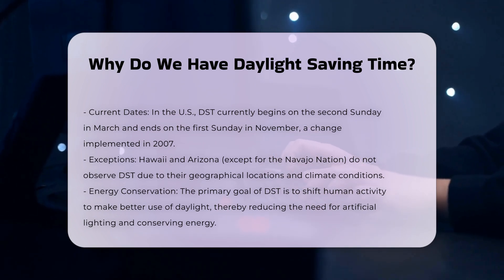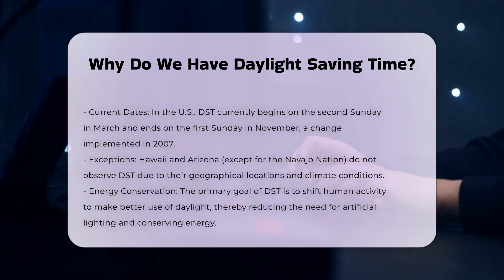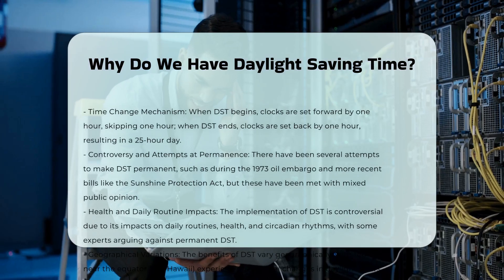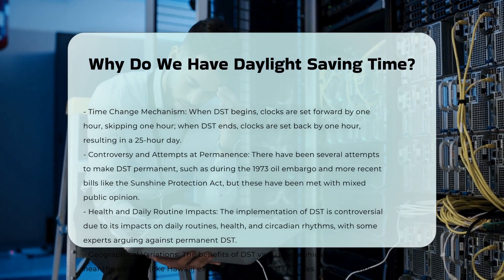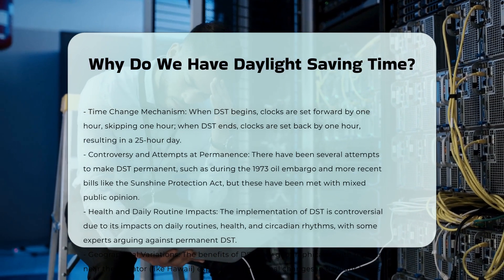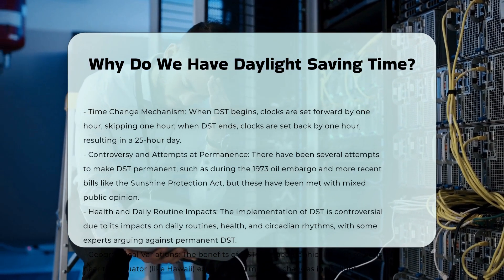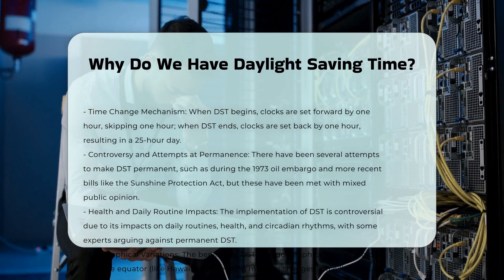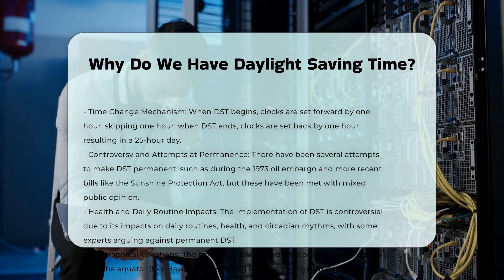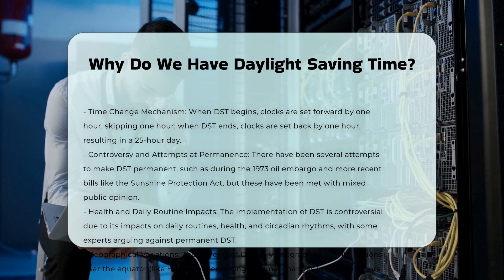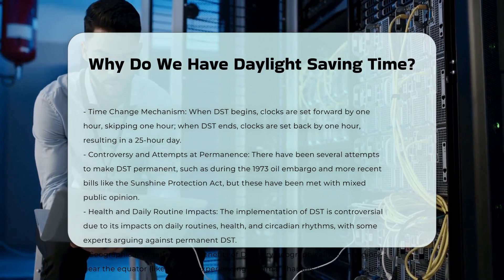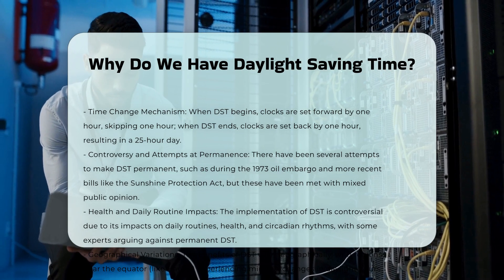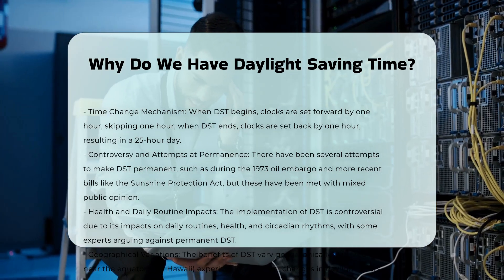The implementation of DST is not without controversy. There have been several attempts to make DST permanent, such as the Emergency Daylight Savings Time Energy Conservation Act in 1973, and more recent bills like the Sunshine Protection Act introduced in 2021. However, these attempts have been met with mixed public opinion, as some argue that the benefits of energy savings are outweighed by the disruptions to daily routines and health impacts.